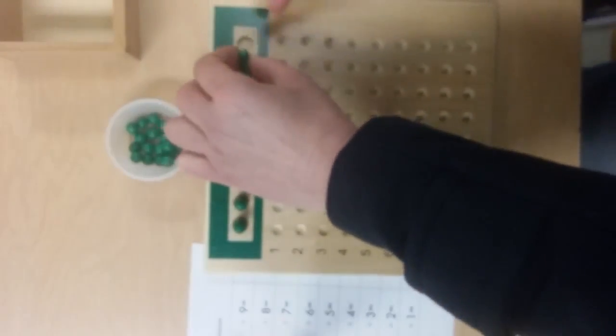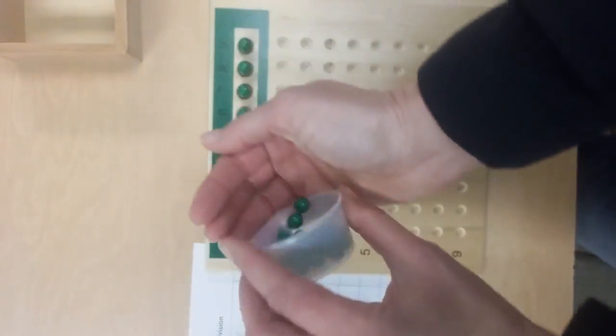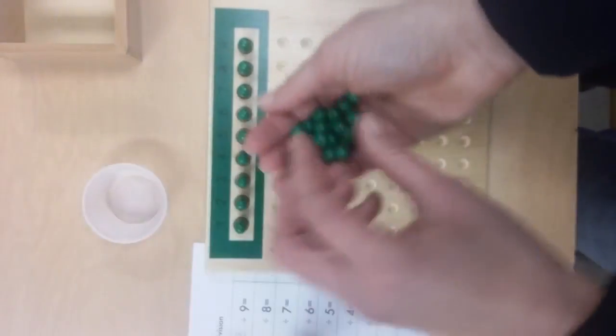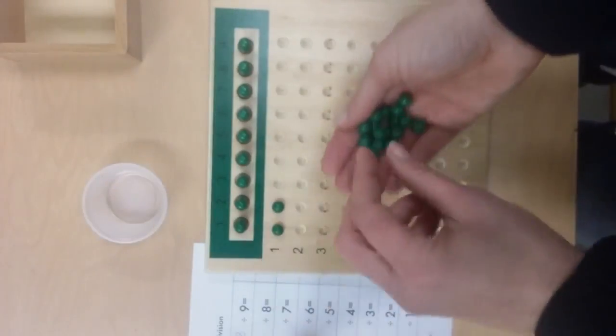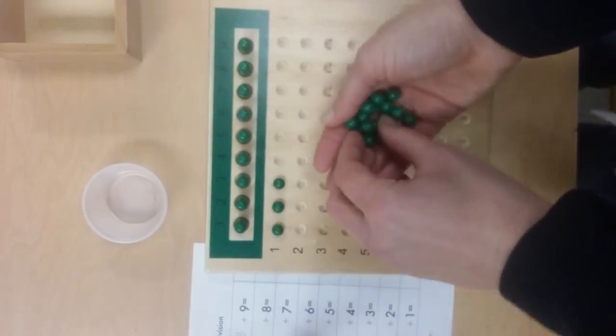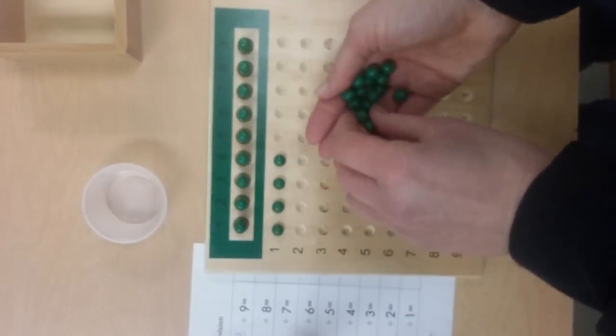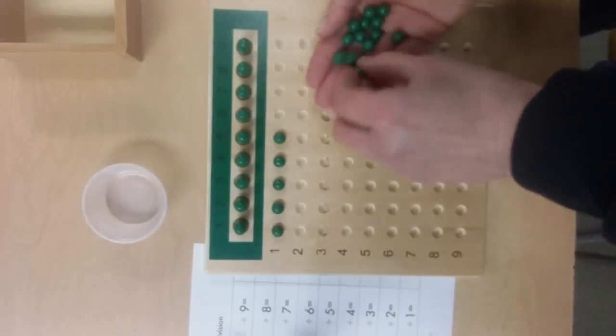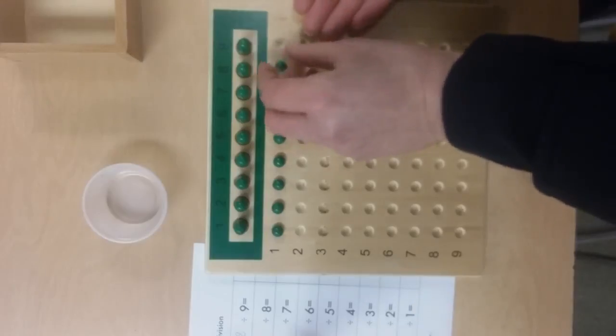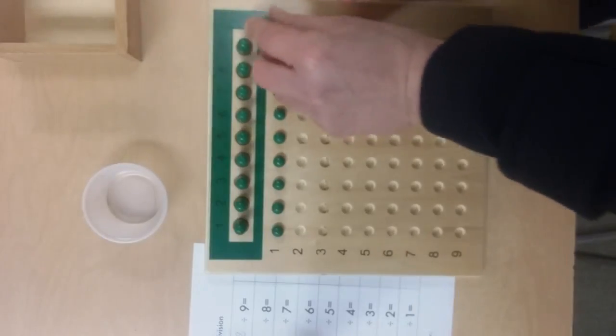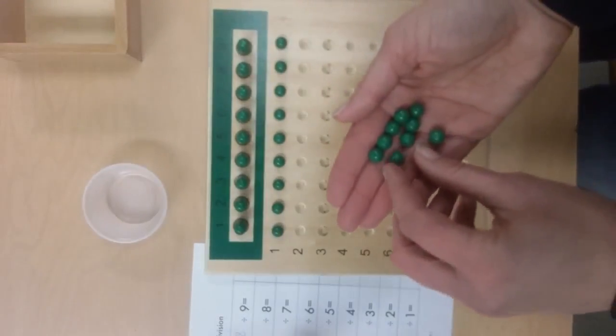Give each skittle one at a time, going all the way across. Once they get to the end, if they have some left in their hand, they're going to distribute them equally to the next row.